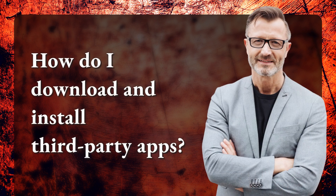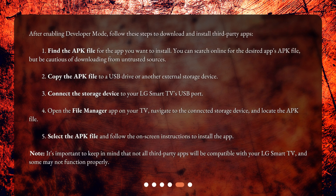How do I download and install third-party apps? After enabling developer mode, follow these steps: 1. Find the APK file for the app you want to install — you can search online, but be cautious of downloading from untrusted sources. 2. Copy the APK file to a USB drive or another external storage device. 3. Connect the storage device to your LG Smart TV's USB port. 4. Open the File Manager app on your TV, navigate to the connected storage device, and locate the APK file. 5. Select the APK file and follow the on-screen instructions to install the app.